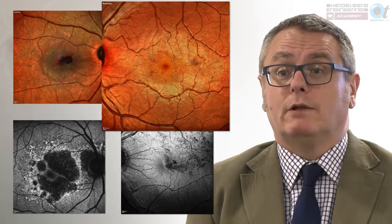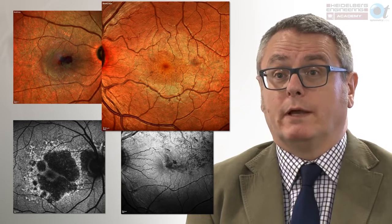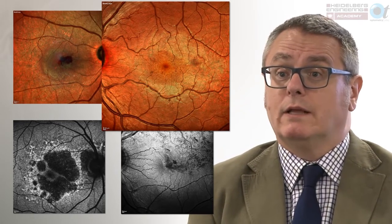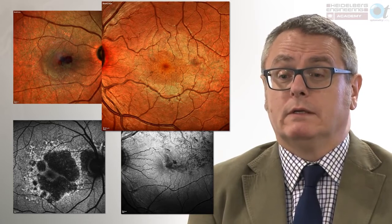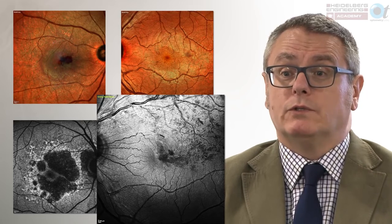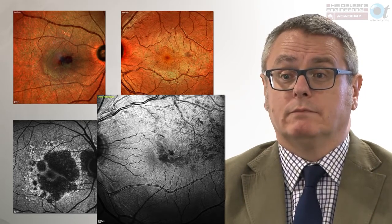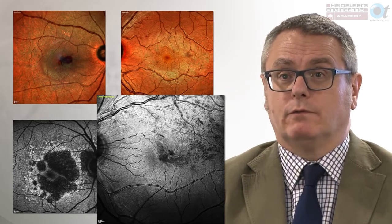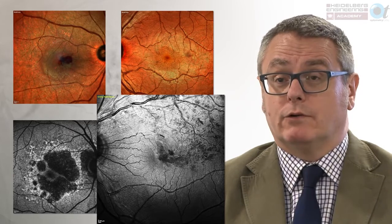If there's evidence of breakdown in the blood-retinal barrier — exudate or multiple microaneurysms — you're likely to see structural change, and your OCT needs to cover those areas. If you see areas of hemorrhaging or subretinal fluid, significant structural change is likely, and that's where your OCT scan should be centred. The final example is a patient with a branch retinal vein occlusion extending into the supratemporal quadrant of the retina, so your scans may need to extend outside the standard 30-degree field of view.